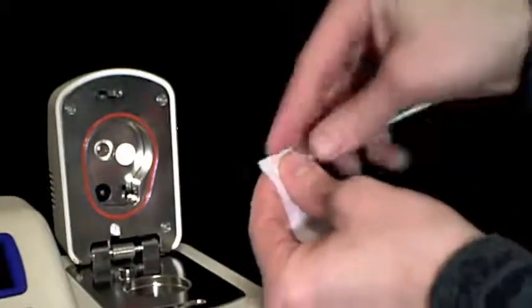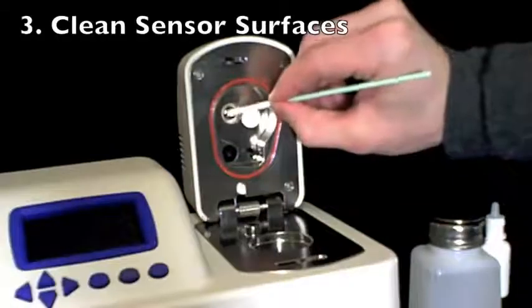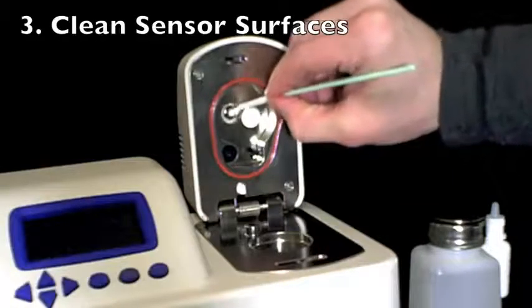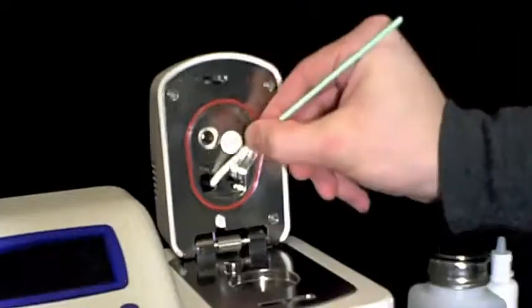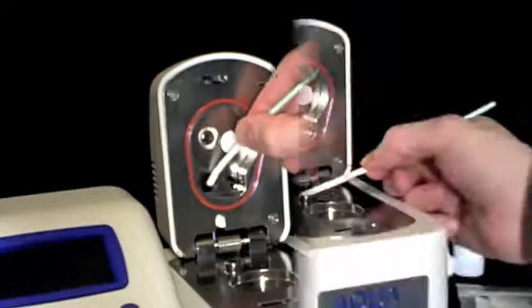In the next step, we use the same technique to clean the surfaces of the sensors within the sensor block. First, take a clean kimwipe, apply a cleaning solution, and clean the thermopile, the mirror, and the optical sensor.